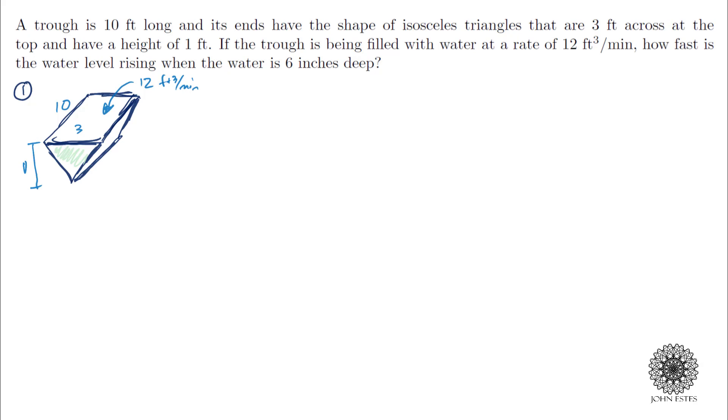Now part two of the process is to identify what's known and what you're looking for. This is very important. If you don't know what you're looking for and you don't know what you have, then you can't really address the question. So what do I know? I know that I'm looking at the water level with a given height, six inches deep. We know that that's 0.5 feet.